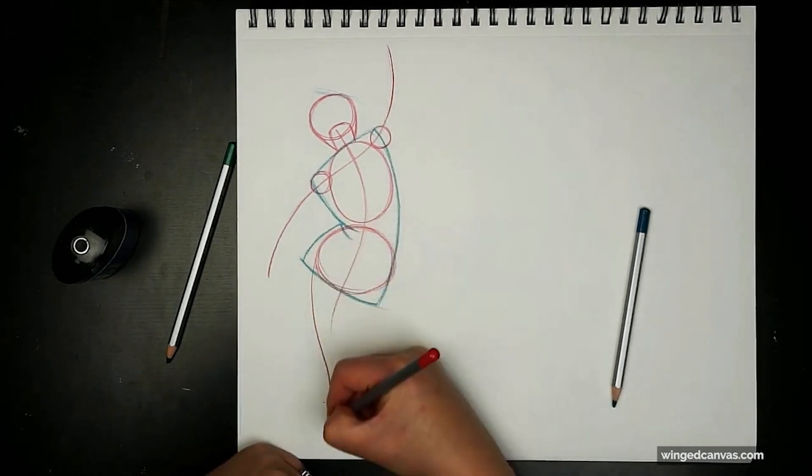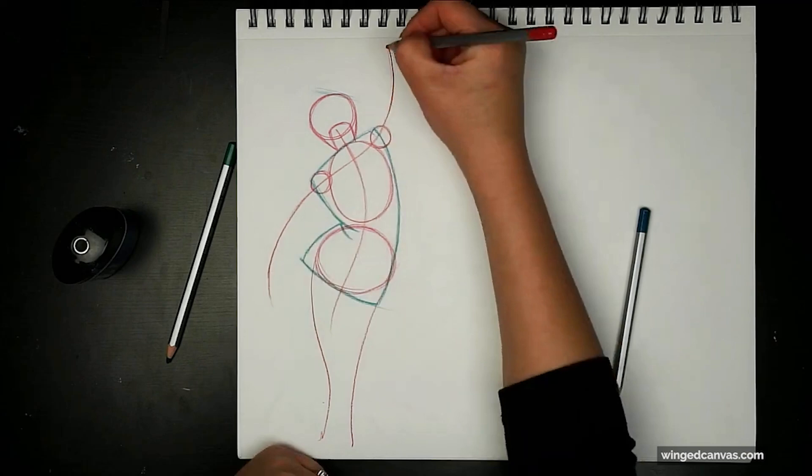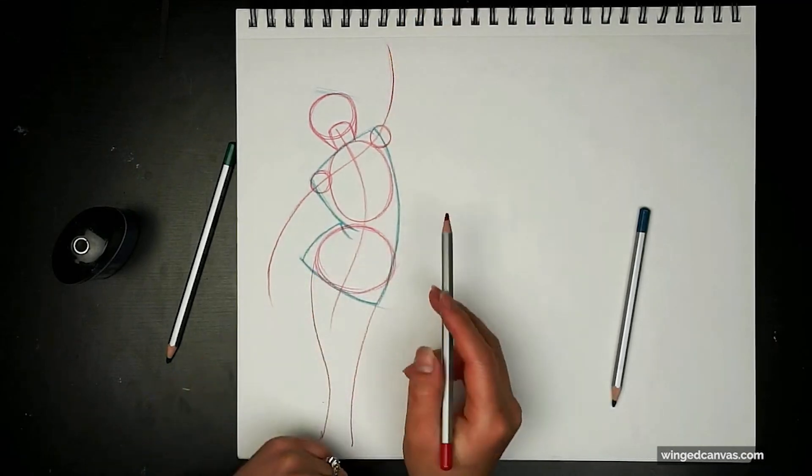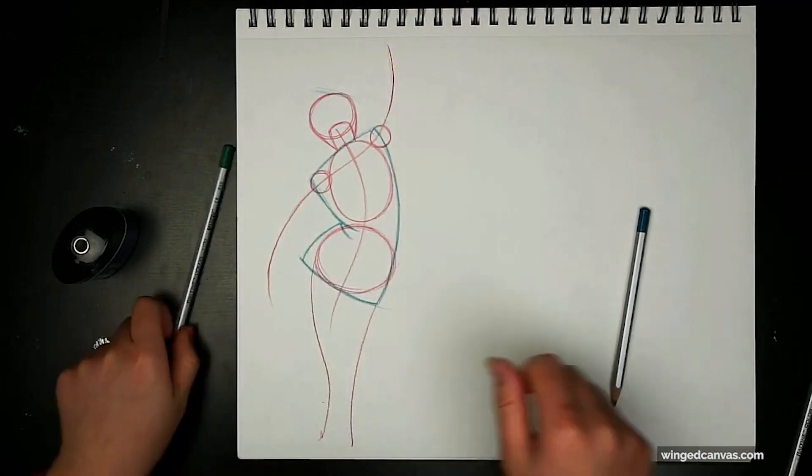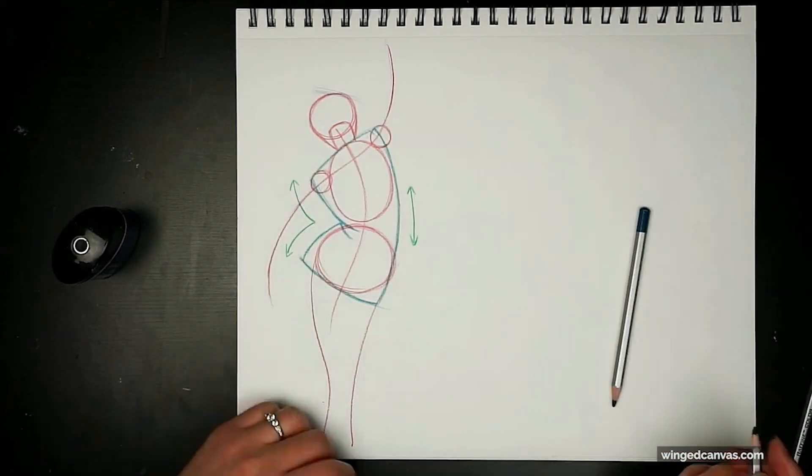Maybe the action of the legs, however you want to counterbalance this pose. It starts with that torso, the extension and the compression. One side is going to be extended, the other side is going to be compressed.